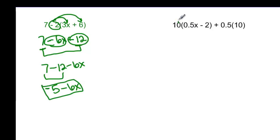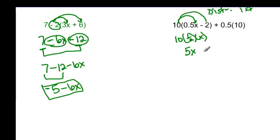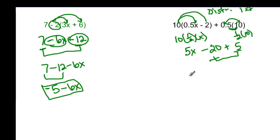Here we have 10 times one-half x — we've got to distribute first; always distribute first. 10 times one-half times x gives 5x, and 10 times negative 2 is minus 20, then plus — but the order of operations says multiply before you add and subtract — so one-half times 10 is 5. Here are my like terms: 5x and negative 20 plus positive 5. The difference is 15, and 20 is larger and negative, so the answer is 5x minus 15.